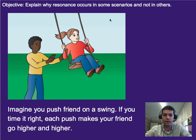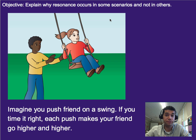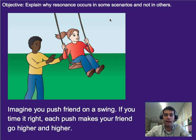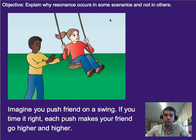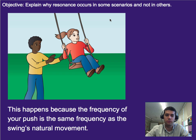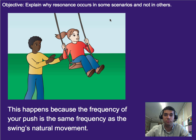Let's imagine you're on a swing, or your friend's on a swing and you're pushing your friend. If you time the pushes right, then each push is going to make your friend go higher and higher and higher on the swing. This is basically just how swings work. It's a good example of you being able to match the natural frequency of the swing's movement.